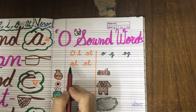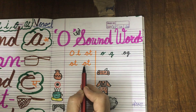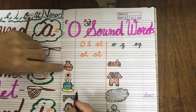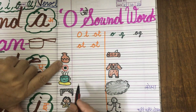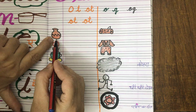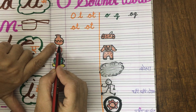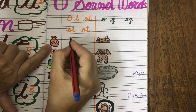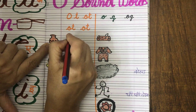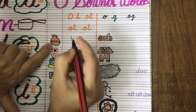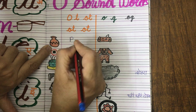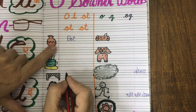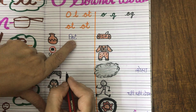You will write three times: O, ta, oat. Now look at which picture is this? Dekho, ma'am nai kya draw kye aap ke liye? This is a pot. Ab, oat — oat hai na ye? Pa, oat. Pa, oat. Kya ban gya? Pot. Pa, oat, pot.